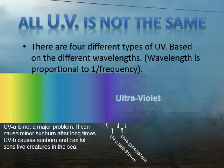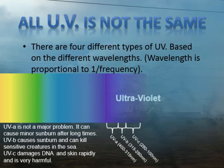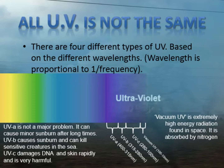UVB is what causes sunburn and kills sensitive creatures in the sea if they are not protected. This is also what the ozone layer protects us from. UVC is high altitude UV and it damages DNA and skin rapidly — it's very harmful. And then there's vacuum UV, which is the very high energy rays found in space. It's absorbed by nitrogen, and as 80% of the atmosphere is nitrogen, it's not considered a problem.